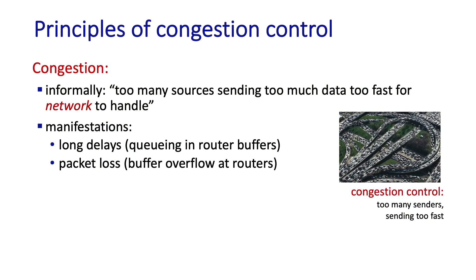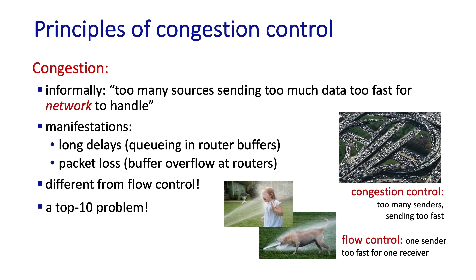Let's start by asking the most basic question: what do we mean by congestion? Informally, congestion is all about too many sources sending too many packets too fast for a congested network link somewhere in the network to handle. Links have a transmission rate, and when the arrival rate of packets exceeds the transmission rate, queues will start to build up and delays will get larger and larger. If the link's packet buffers fill up completely, arriving packets will be dropped and lost. Congestion control is really about multiple senders sending too fast in aggregate, while flow control is about speed matching between a single sender and a single receiver.